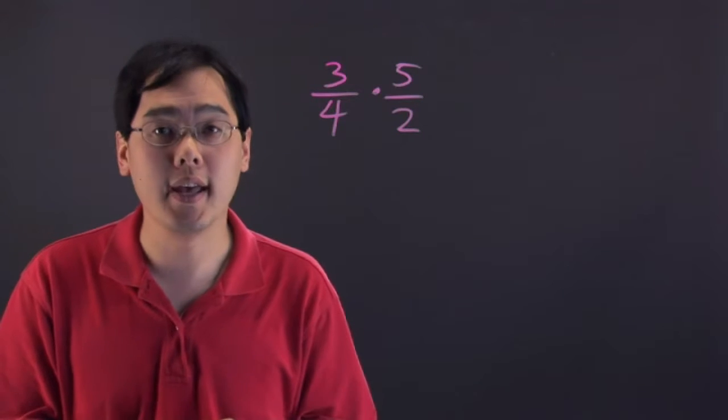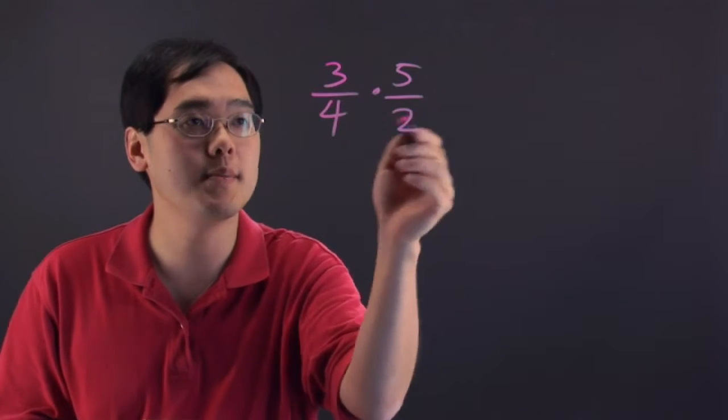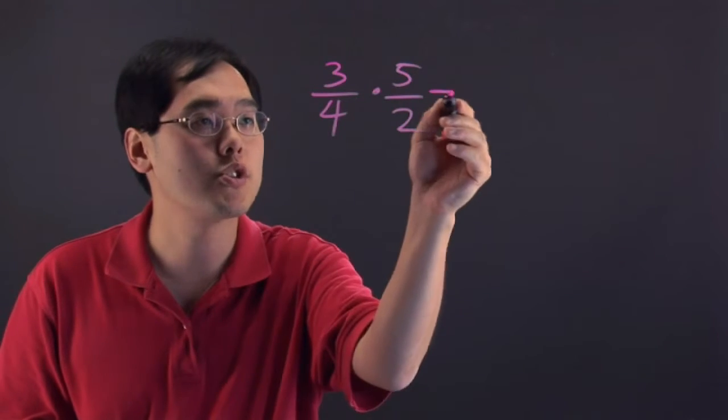You could reduce along the way if it allows it, but other than that it's a pretty straightforward process. In this particular case, there doesn't seem to be a lot of room for reducing, so we're just going to multiply across.